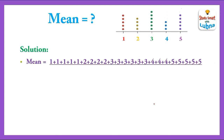For the denominator, we will count the total number of dots. Counting all dots gives us 23. So the denominator value is 23. After adding all the values, the mean is 68 upon 23, which is equal to 2.9.